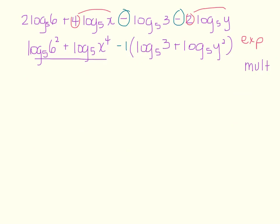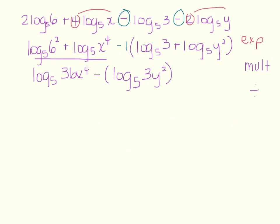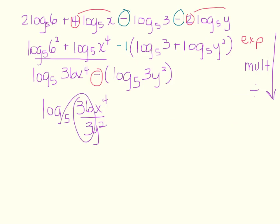Now pull in the multiplication. Since these terms are added together, they condense using multiplication: log base 5 of 6 squared times x to the 4th, minus log base 5 of 3 times y squared. Then for division, since I'm subtracting, these condense to log base 5 of 36x to the 4th over 3y squared. Simplifying gives log base 5 of 12x squared over y squared.